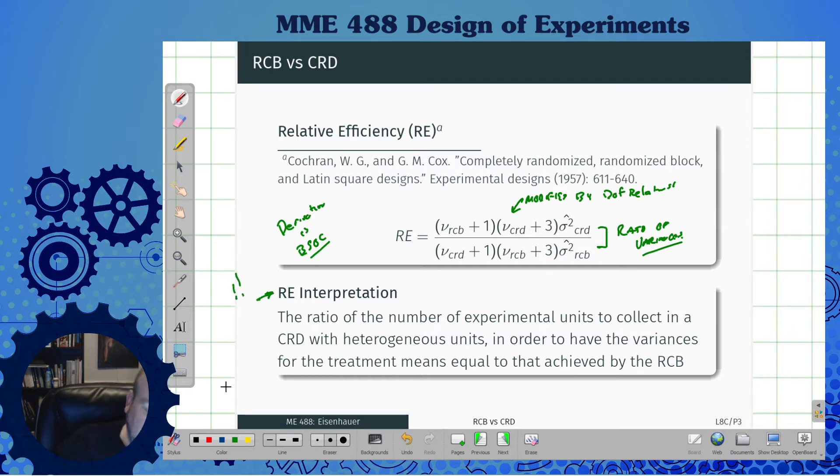This is the most important stuff. It's basically the ratio of the number of experimental units to collect in a completely randomized design with heterogeneous units in order to have the variances for the treatment means equal to that achieved by the randomized control block. Basically, in other words, how many more experiments do I need to run if I did not restrict things? If I didn't do the blocks?